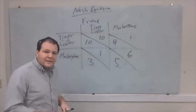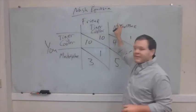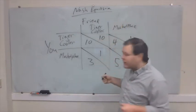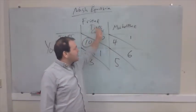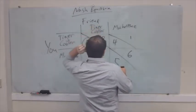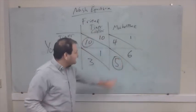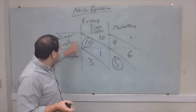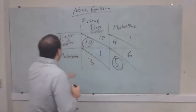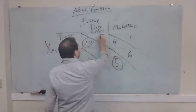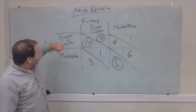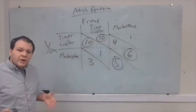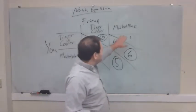Let's find our best responses. If you knew for sure your friend was going to be at the Tiger Cooler, there's no dominant strategy — no dominated strategy. Your best move is going to depend entirely on what your friend does. If your friend knows you're going to be at the Tiger Cooler, they'll get a 10 if they go to the Cooler and a 1 if they go to the Marketplace, so the best move is to go to the Cooler. And if they know you're going to be at the Marketplace, they'll be happier at the Marketplace than eating alone at the Cooler. So for them, there's no dominant strategy either — what they want to do depends entirely on what you want to do.